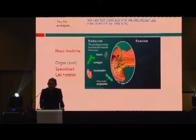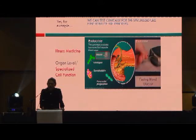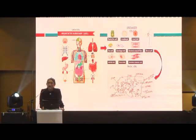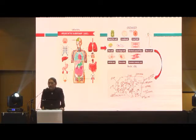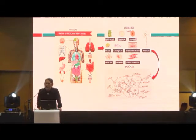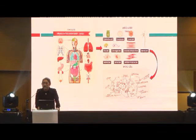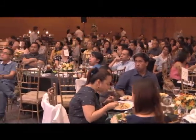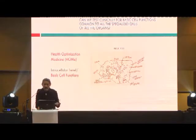For example, if you wish to test for the indirect effect of insulin, then we test for the fasting blood glucose. But we forget that underneath all of these, from the organ to the specialized cell, there's a basic or foundational cell made up of the nucleus, the mitochondria, and the plasma reticulum cell membrane. It has not been possible before to detect what's going on inside the cells. But now can we have tests for basic cell function common to all specialized cells of all our organs? And this is where health optimization medicine comes in.